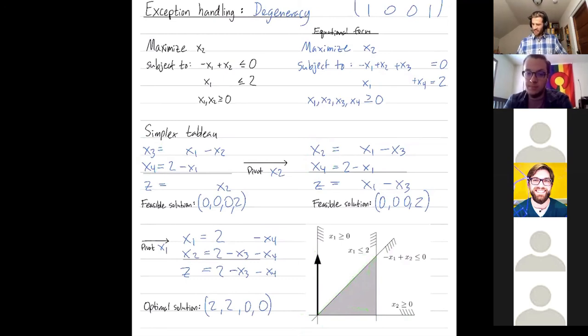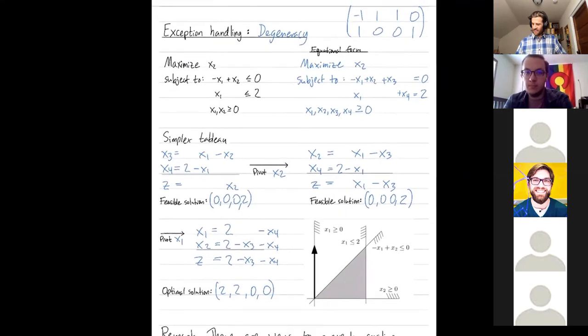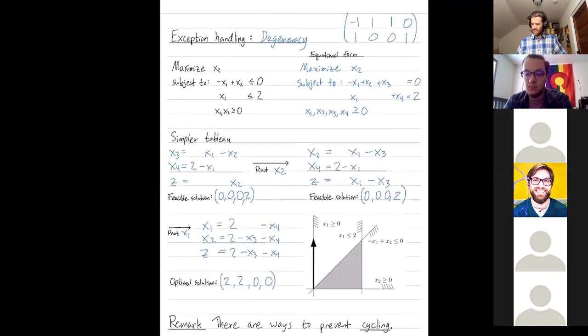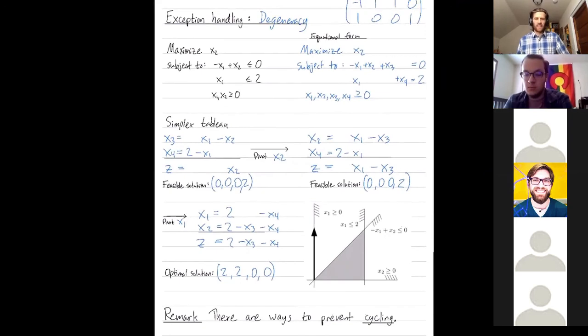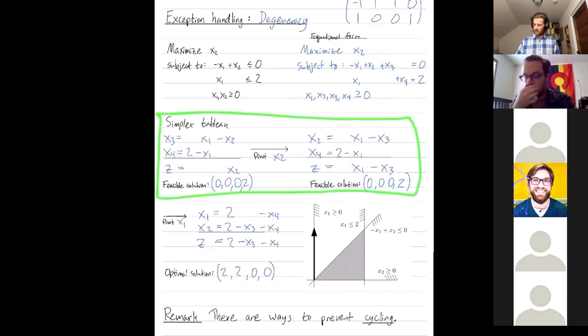Questions so far? All right, this is one of the stickiest parts of the simplex algorithm. Sometimes you pivot and you change basis, but you don't change what vertex you're at. If you're not careful, you can do this in really bad ways, which is called cycling.